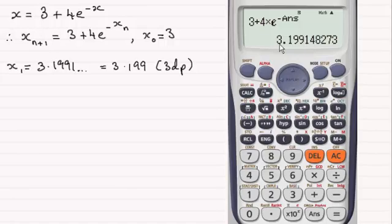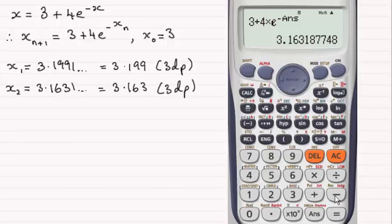is 3.199 to three decimal places. Press equals again and now we've got 3.1631, and you can see to three